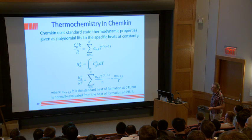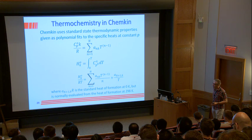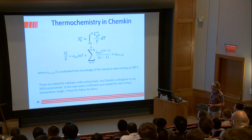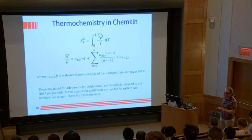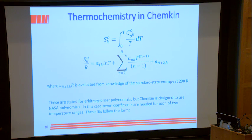For the entropy, we have H over RT as the sum of these polynomial fits over N. R is the constant related to heat of formation at 0 K, but is normally evaluated at 298 K, where A_{N+1} times R. The entropy is the integral from 0 to T of Cp over T dt. These polynomial values are used in Chemkin all the time.